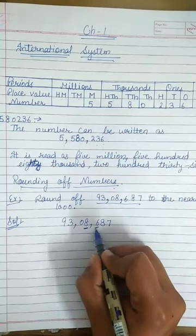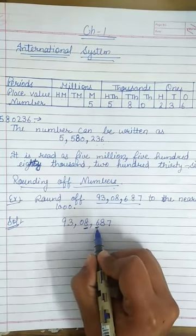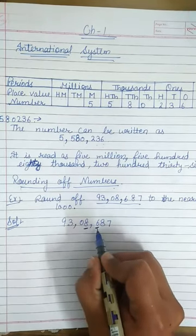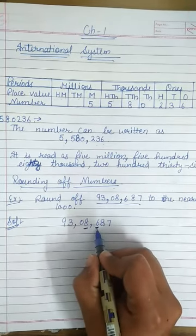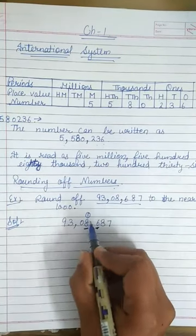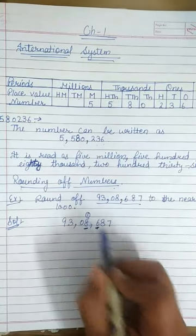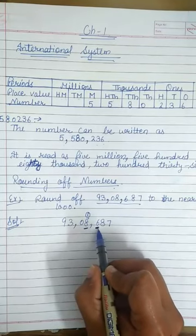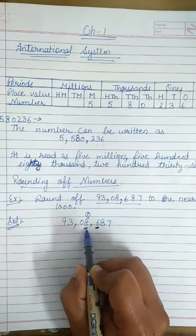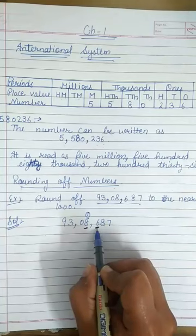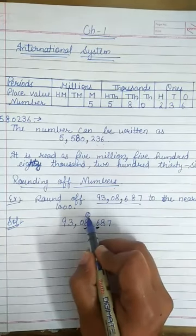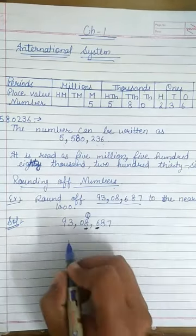Now, look the number at the hundred place. If number at the hundred place is equal to 5 or greater than 5, then we give carry to the number that is at the thousand place. Here 6 is at the hundred place and 8 is at the thousand place. 6 is greater than 5. So we give one carry to the 8. And its answer is 93,9,000.